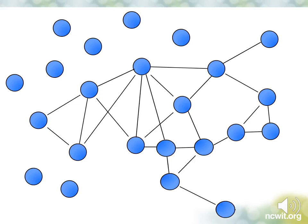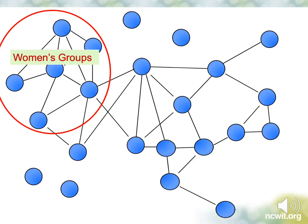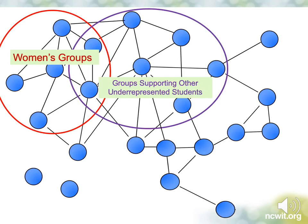So what can you do? The first obvious thing you can do is create a Women in Computing group to help create some connections among the women in your program. These groups can be a great source of support, friendships, and networking. Similarly, you can support the creation of student groups for racial and ethnic minorities appropriate for your context, such as a chapter of the National Society of Black Engineers. Both of these approaches can provide a safe and productive space for students from groups that are underrepresented in computing.